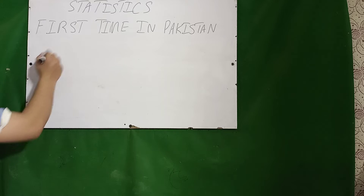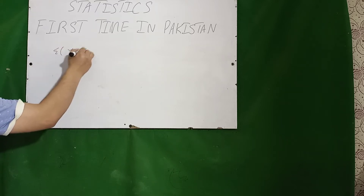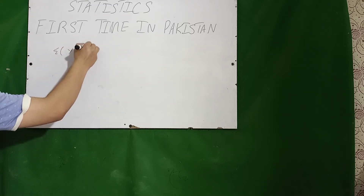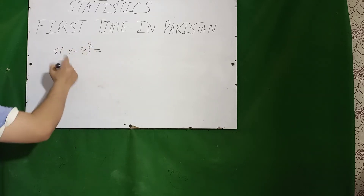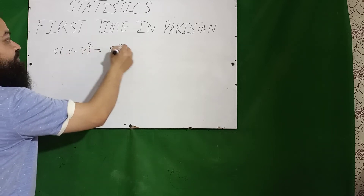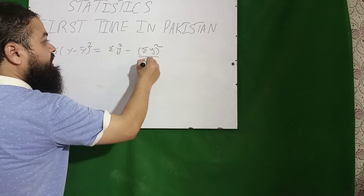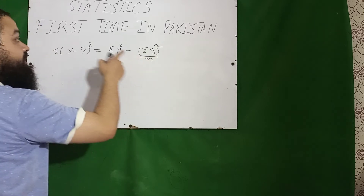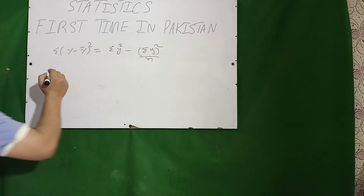As I told you, Σ(y − ȳ)² is total variation. It can also be written as Σy² − (Σy)²/n. This is a very important question for all the papers of statistics.